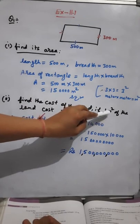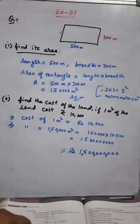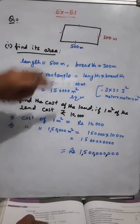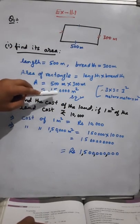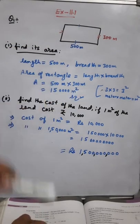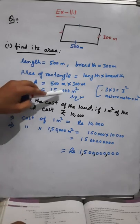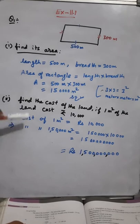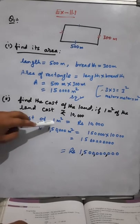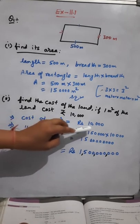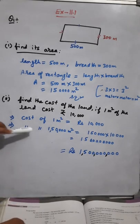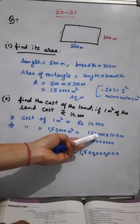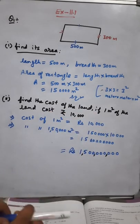One meter square area ka cost rupees 10,000 hai and total area of this land is 1,50,000 meter square. So cost of 1,50,000 meter square will be 1,50,000 multiplied by 10,000. Just like if one pen ka cost rupees 5 hai, then five pens ka cost five times 5 hoga — same logic.